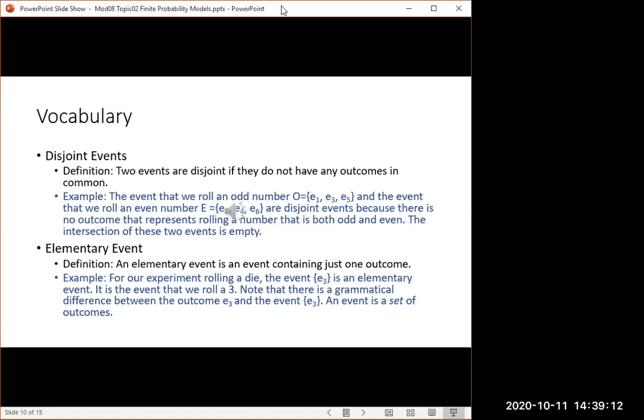If you remember our discussion of probability from a few sessions ago, our capital P function, the probability function, you give it an event as input and it gives you back a number between zero and one. So P is a grammatical kind of thing. The input to P needs to be an event, a set of outcomes, not just an outcome.